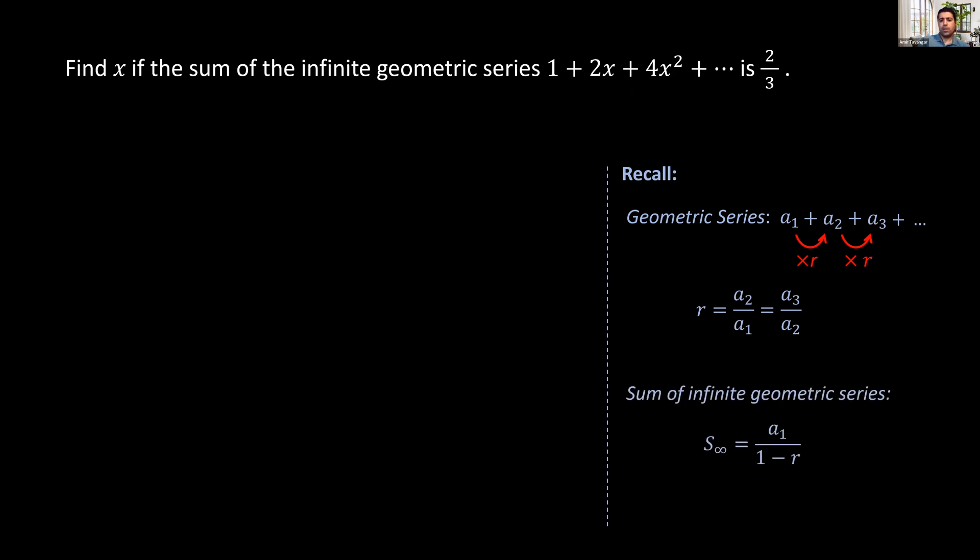The sum of an infinite geometric series can be found by dividing the first term by 1 minus the common ratio.